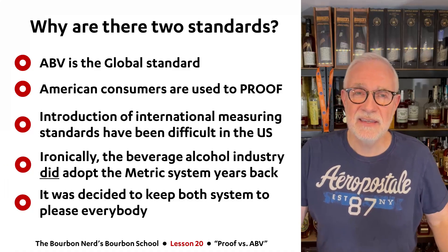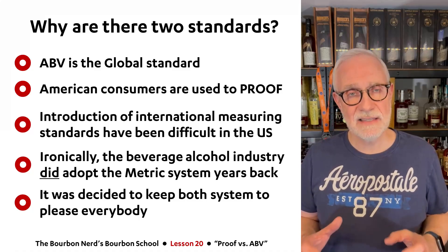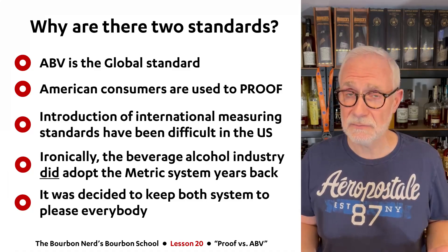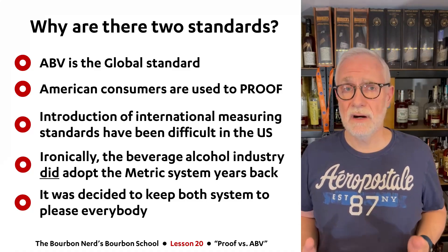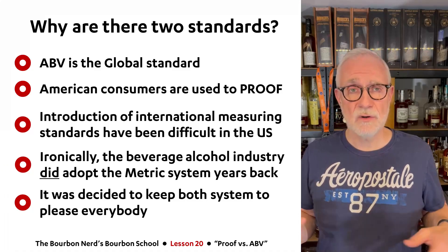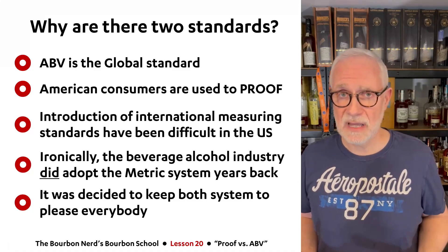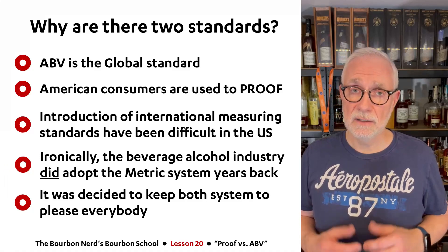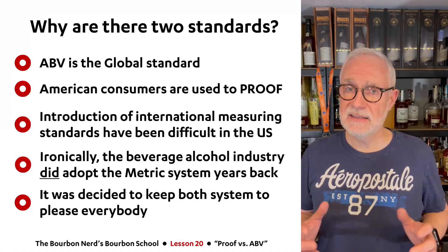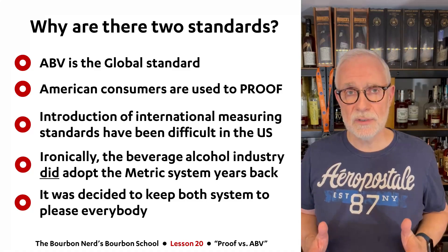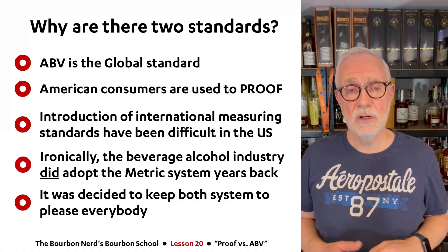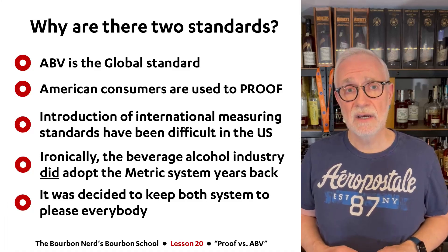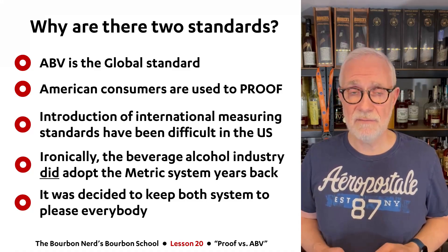Ironically, if you look at beverage alcohol specifically, the US has actually embraced the metric system — it's all about liters and milliliters. So it is a little bit confusing. I think the reason why there are two standards is simply to make everybody happy. It doesn't take that much effort — you basically need to multiply by two and put an extra number on your label. Unless you're really bad at math, of course. It's simply to serve all people. Remember: ABV is mandatory and proof is optional, so you will find whiskey, bourbon, and rye products that only have the ABV indication.